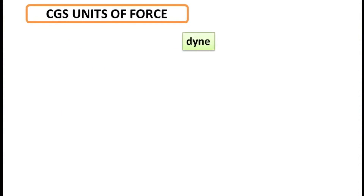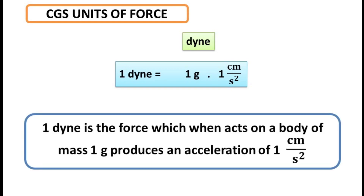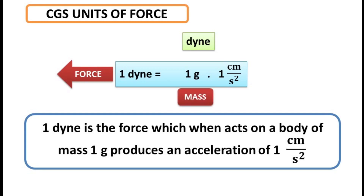The CGS unit of force is dyne, and one dyne is equal to one gram into one centimeter per second squared. Definition of dyne: one dyne is the force which, when acting on a body of mass one gram, produces an acceleration of one centimeter per second squared.